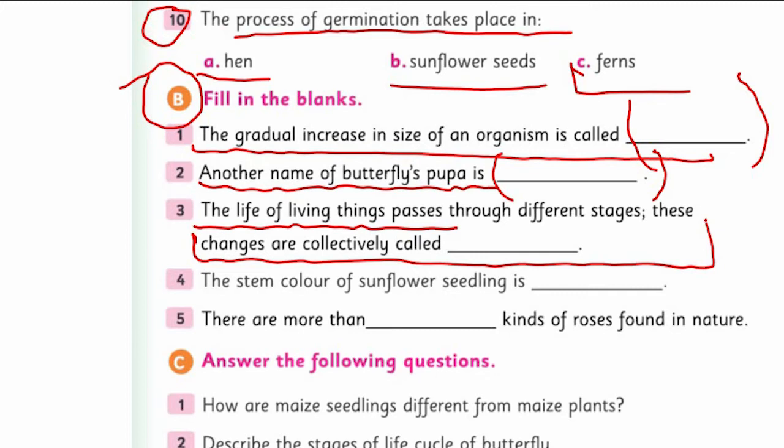Question four: The stem color of sunflower seedling versus sunflower plant - what was the main difference in color? You already know this. Question five: There are more than how many kinds of roses found in nature? This is from your interesting activity. Go through it, or you can get help from parents and teachers.